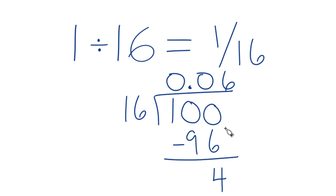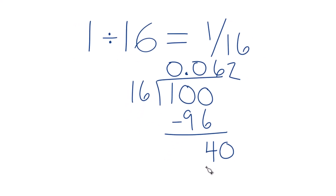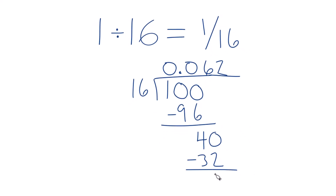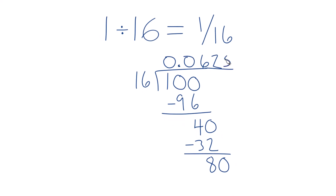16 doesn't go into 4, so we call it 40 if we move over one. 3 times 16 is 48, so we have to go with 2. 2 times 16 is 32. Subtract, we get 8. Call it 80, move over one. And 5 — 5 times 16 is 80. So when we subtract, we get 0. We're done.